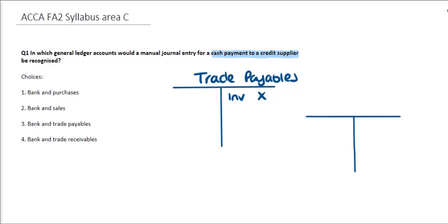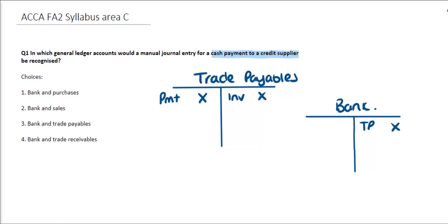For this transaction, if we're looking at a journal entry for a cash payment to credit suppliers, once that cash is paid to the credit supplier it's going to reduce the liability. So the payment would go on this side to reduce what was originally shown as owed, and then the other side would go to the bank account. We would debit Trade Payables and then credit our bank account. The money is coming out of the bank account to pay that trade supplier, reducing that asset, which is why it's on the credit side.